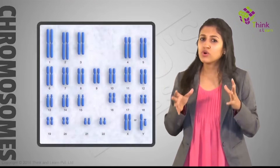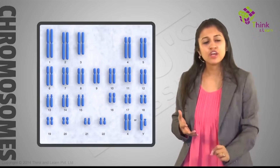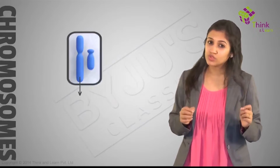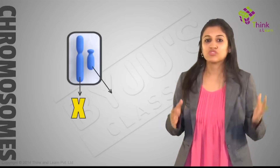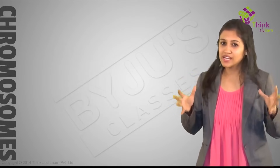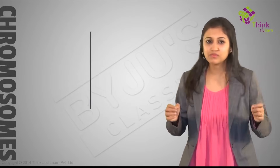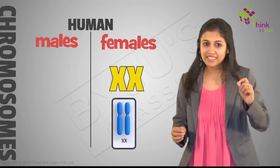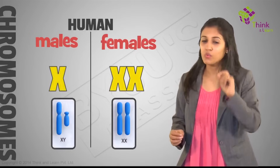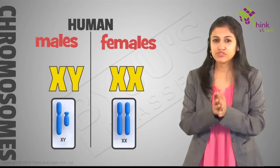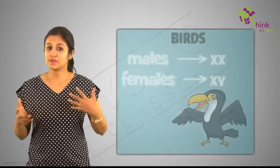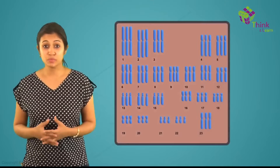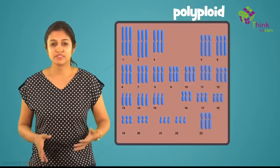Not long after homologous chromosomes were discovered, someone noticed one exception. Human males have one pair that is not homologous. The larger of these chromosomes was called X and the smaller was called Y. So we boil down to one big basic genetic difference between human males and females: females have two X chromosomes, males have one X and one Y. The other 22 pairs of chromosomes are the same. With birds, it's exactly the opposite — XX is male and XY is female.